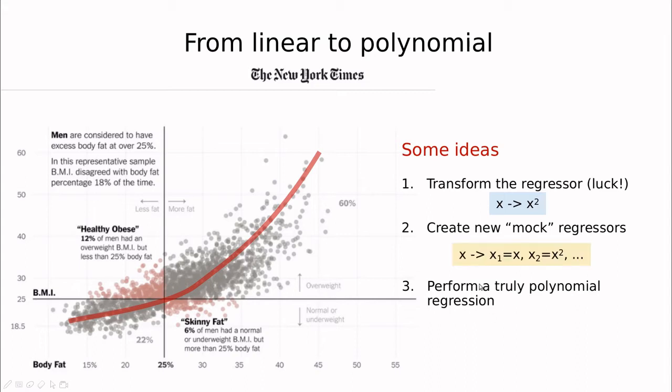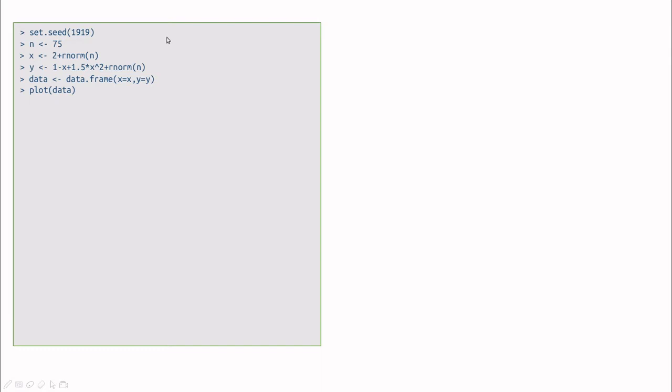We could also create mock regressors, like for instance changing x by a new set of regressors with x1 equals x, x2 equals x squared. And the other thing that we can do is perform a truly polynomial regression. Okay, so let me show you an example.